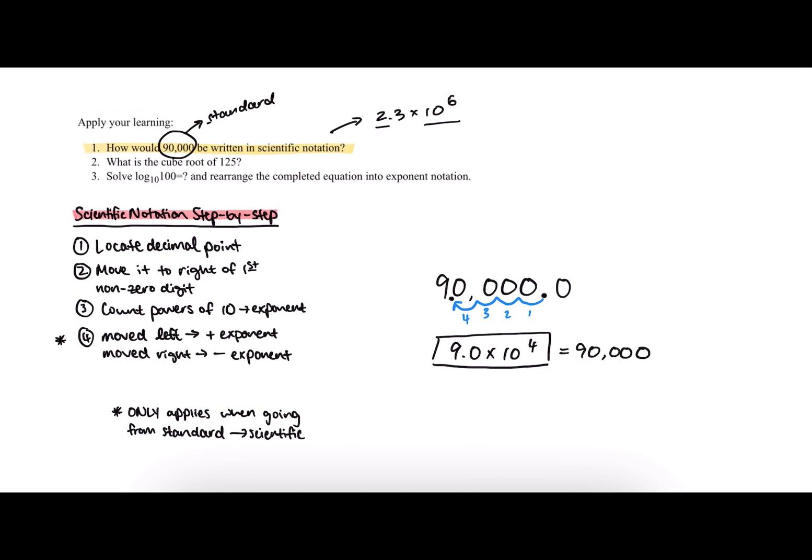Just as a side note, remember that this moving left and moving right exponent rule only applies when we're going from standard to scientific notation. You can see that if we start from scientific notation and say that's a positive exponent, we need to move our decimal point to the left, we actually get an entirely different number.